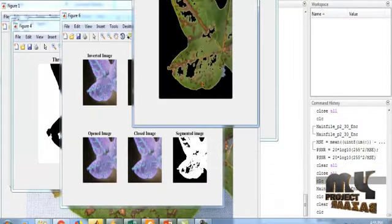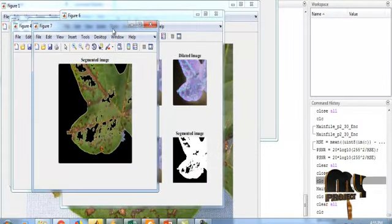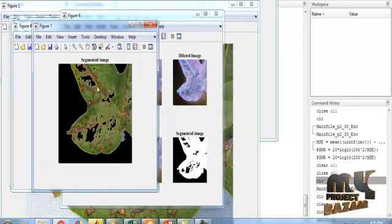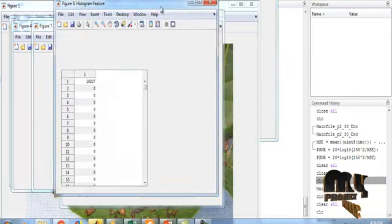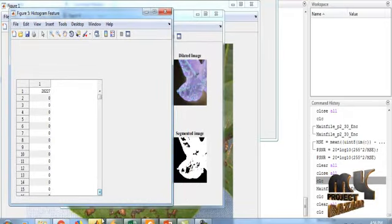After the final segmentation, the corresponding segmented region only in the color form and the other background will be eliminated. Hence, this result is shown in figure 7 with the title segmented image. After getting the segmented image, the feature is extracted.